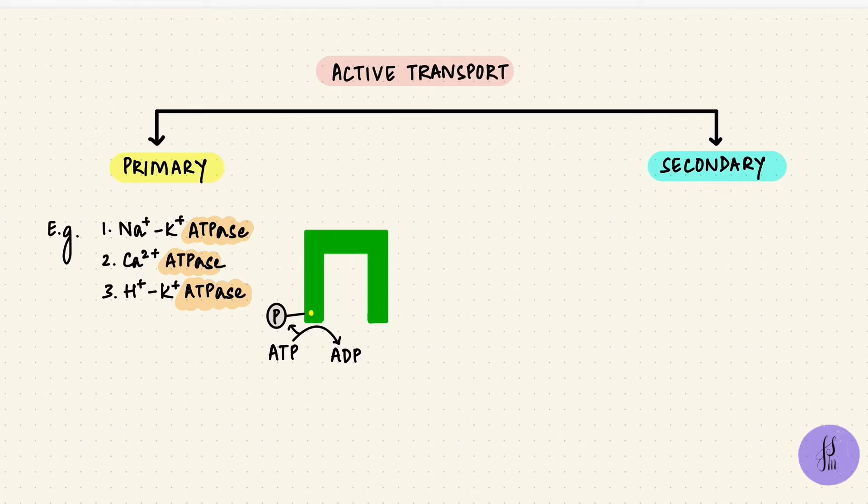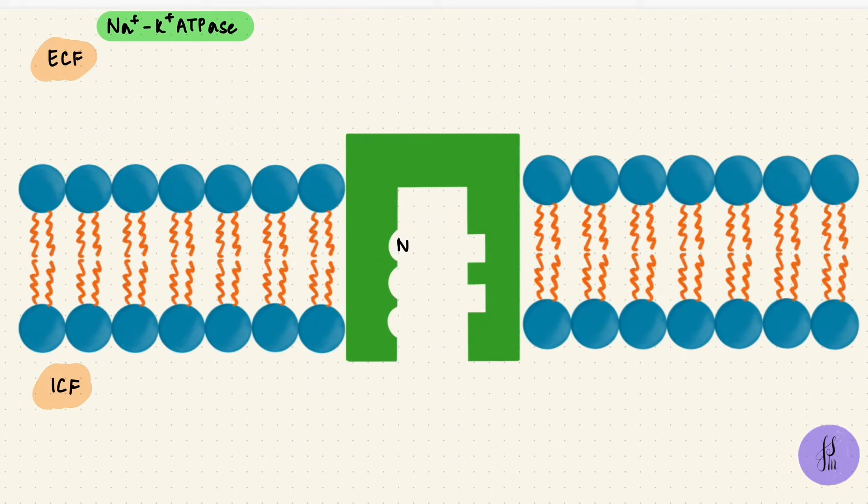To understand it, we'll take the first example, that's the sodium potassium pump, which is the most common active transport pump seen in most cells of the body. This pump will move three sodium ions out of the cell and two potassium ions inside.